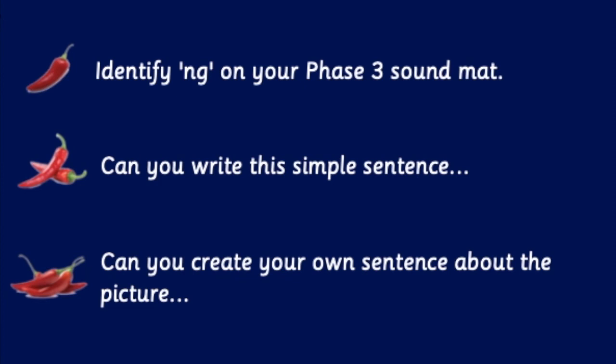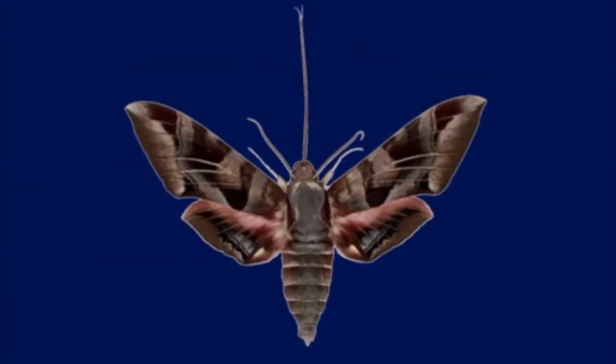Let's have a look at our chilly challenges for today. Chilly one: identify ng on your Phase 3 sound mat, then practise writing ng. Chilly two: write the simple sentence 'The ring is gold'. And if you're ready for chilly three, create your own sentence about the picture — your sentence needs to include the words 'moth' and 'wing'. Don't forget your crafty capital letters, words on the line, finger spaces, and a full stop. Good luck with your chilly challenges — I'll see you tomorrow, bye everyone! And don't forget our new digraph — ng!